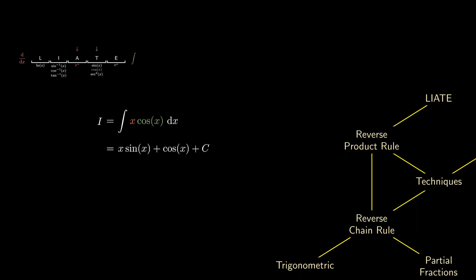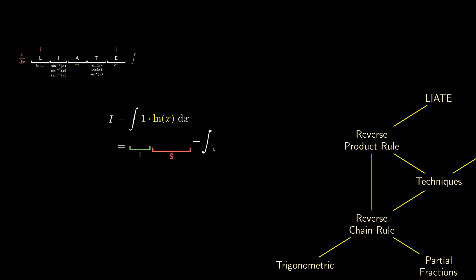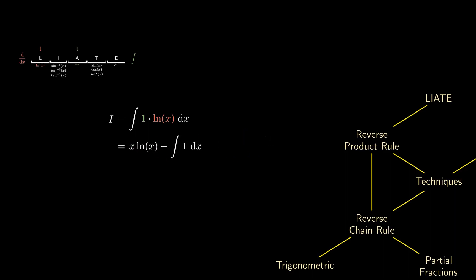We can even use this trick to obtain the integral of the logarithm of x. It might not be obvious what the two functions are, but a useful trick is to note that log equals 1 times the log. Interpreting 1 as x to the 0, 1 is the more rightward function that gets integrated to x, while the logarithm remains the same and gets differentiated to 1 over x. Simplifying, the integral of 1 is just x, adding the arbitrary constant — that is our final answer.